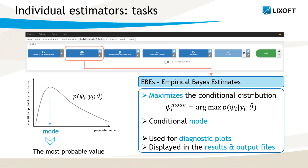The first task, called empirical base estimates, maximizes the conditional distribution and gives the conditional mode. This is the most probable value of individual parameters. They are used to generate diagnostic plots such as individual fits and can be checked in the Monolix interface in the results tab or in the output files.